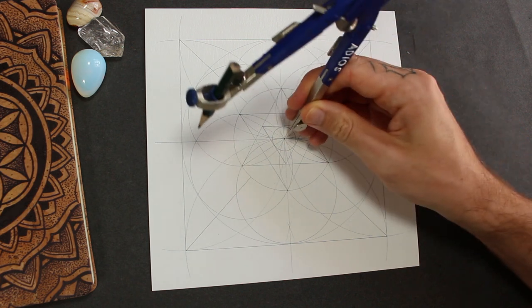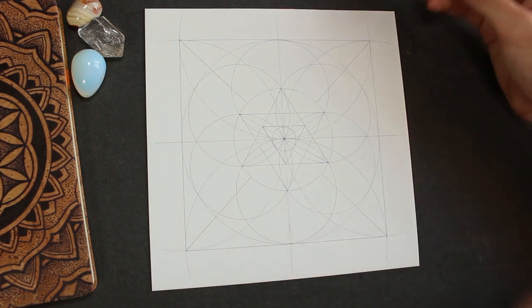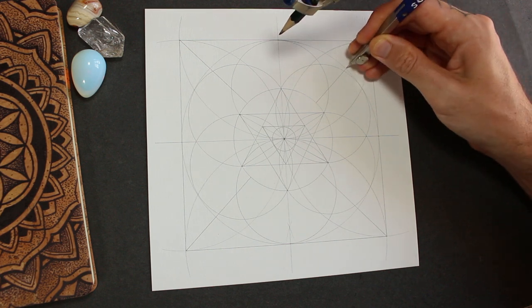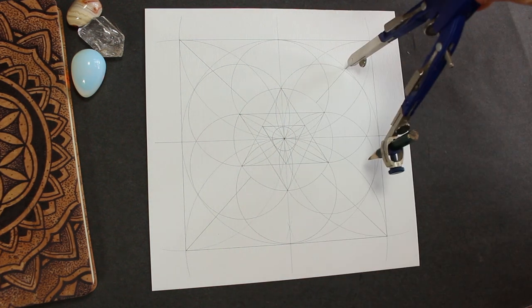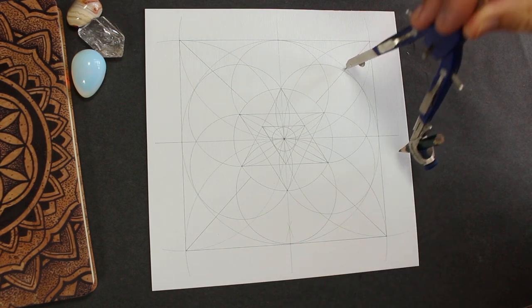And now the compass should still be set to this size. And now we're going to use those lines that we just made, where they cross the circle. We're going to use them to draw some more arcs. And I'm going to go outside of the square because we're going to need them a little later on.